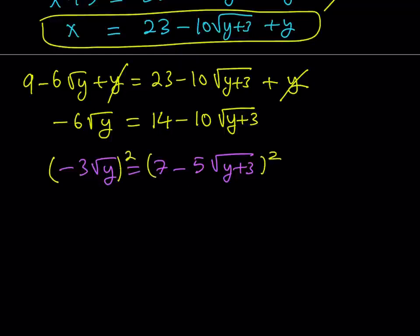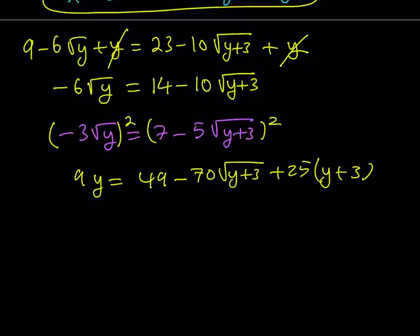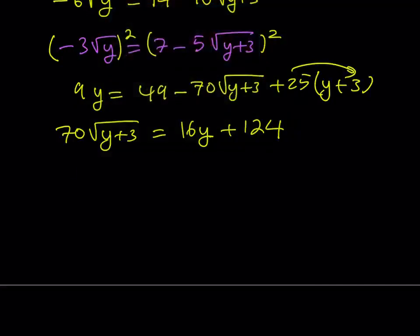Let's go ahead and do that one more time. This gives me 9y is equal to 49 minus 70 times the square root of y plus 3, plus 25 times y plus 3. Let's simplify: I isolate 70 times the square root of y plus 3, and bring the 9y over. So I have 25y minus 9y, which gives 16y. Then 25 times 3 is 75, and adding 49 gives 124. So I have 70 times the square root of y plus 3 equals 16y plus 124. We can divide everything by 2 one more time: 35 times the square root of y plus 3 is equal to 8y plus 62.